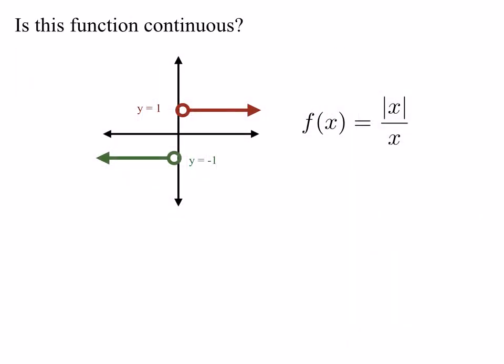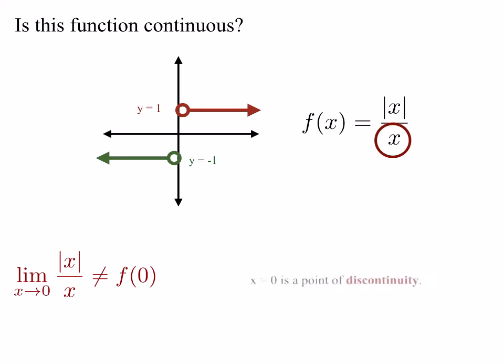Let's consider another function: f of x equals absolute value of x over x. We know that this function is 1 when x is greater than 0, and negative 1 when x is less than 0, and it has no value when x equals 0. So the limit as x approaches 0 of the absolute value of x over x is certainly not equal to f of 0, because 0 is not in the domain of our function. And so we say x equals 0 is a point of discontinuity.